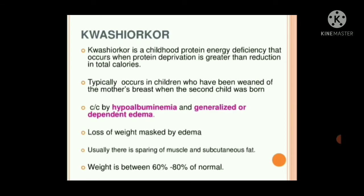Next is kwashiorkor. Kwashiorkor is a childhood protein energy deficiency that occurs when protein deprivation is greater than the reduction in total calories — there is a severe deficiency of protein relative to calories. It typically occurs in children who have been weaned from the mother's breast when a second child is born, and a proper weaning diet is not provided.